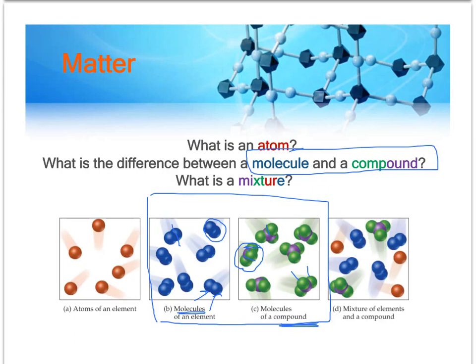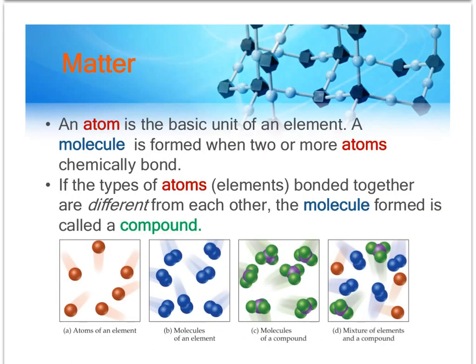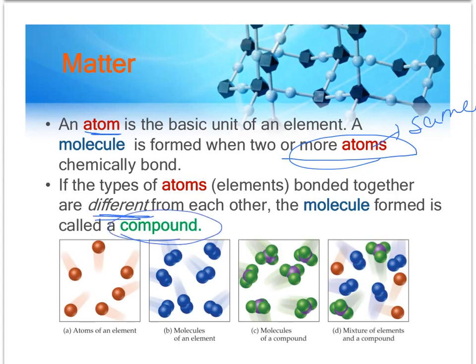So let's look at the formal definitions. I think we know what an atom is. It's the building block of matter. A molecule is when two or more atoms chemically bond. These atoms have to be the same in order to be called a molecule. If atoms are different, instead of a molecule, we call it a compound.